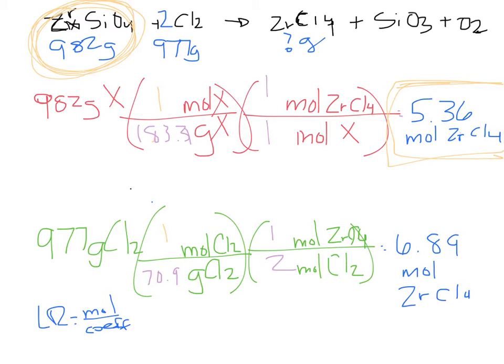It all depends on how things are converted. Just because Cl₂ was the least amount doesn't make it automatically the limiting reactant. So now that we know what our limiting reactant is, are we still having to go to grams of ZrCl₄? What are we already in? Moles — so just convert it one more step to grams.